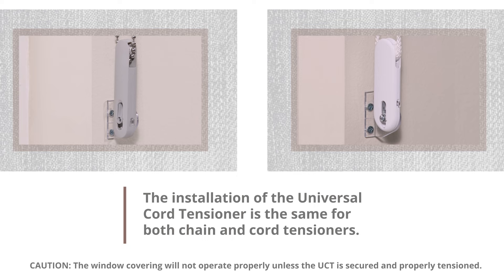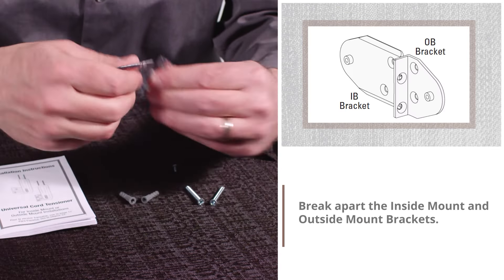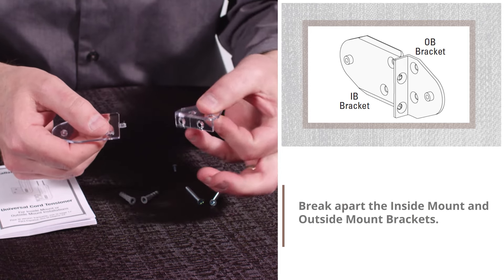The installation of the Universal Cord Tensioner is the same for both chain and cord tensioners. Break apart the inside mount and outside mount brackets.